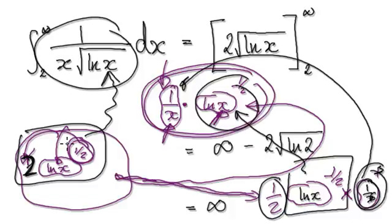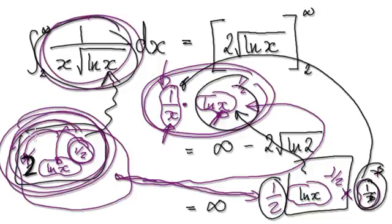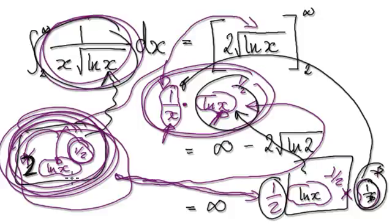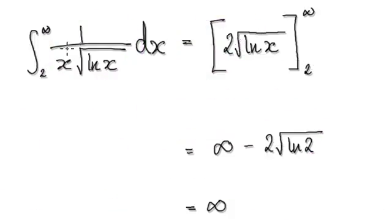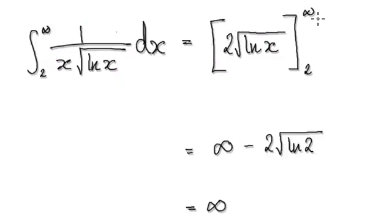Learn to try to integrate just by glancing at it rather than using substitution. Integrating this gives you 2 times the square root of natural log of x — because the bubble to the power of one half is the square root, and you have your factor of two. So integrating this expression gives this result here.